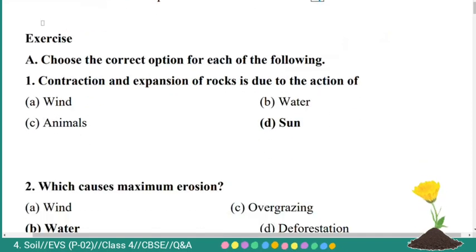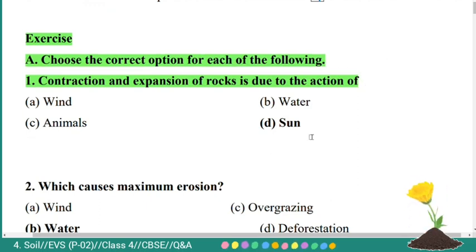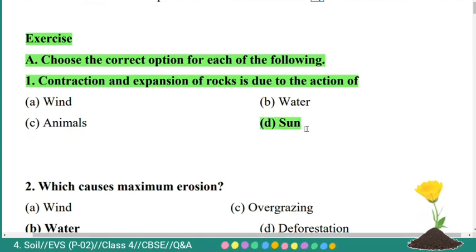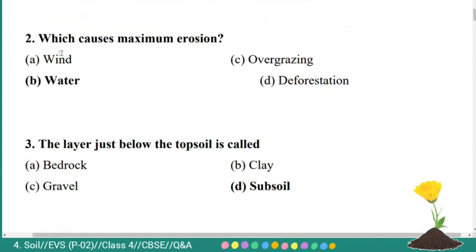Now we will see exercise questions. First main: choose the correct option for each of the following. First question: contraction and expansion of rocks is due to the action of — option A: wind, B: water, C: animals, D: sun. Here the correct answer is option A: wind.